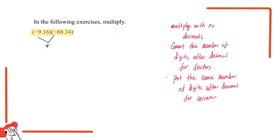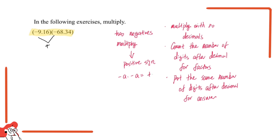Here's the key point: two negative signs, if they multiply, become a positive sign. So negative a times negative a becomes positive a times a.